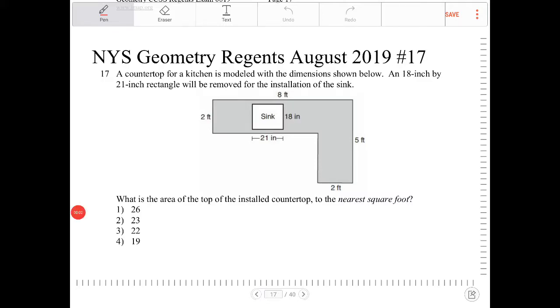A countertop for a kitchen is modeled with the dimensions shown below. An 18 inch by 21 inch rectangle will be removed for the installation of the sink. What is the area of the top of the installed countertop to the nearest square foot?